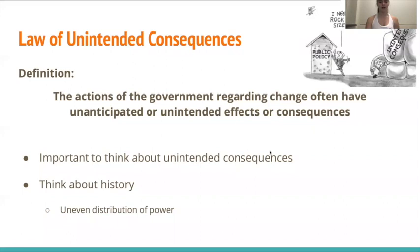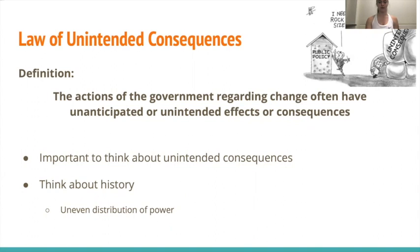Along with those unanticipated consequences, we have the law of unintended consequences — essentially where the actions of government regarding change have unanticipated or unintended effects. It is important to think about all of the effects that occur due to a change in government, not just the obvious ones, and to relate this to history. One possible consequence is the uneven distribution of power, which is something our country has tried to stray away from. Being able to pass amendments more easily could disrupt this and create an uneven distribution — and that is one unintended consequence we need to watch out for.